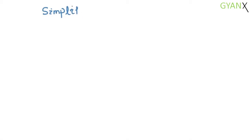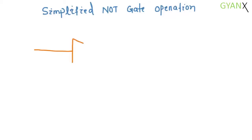A NOT gate is a single input inverter. As you can see, this is the input and the corresponding output.